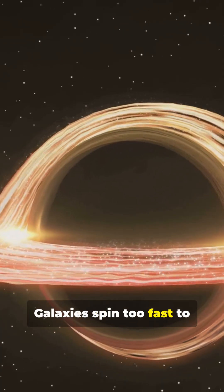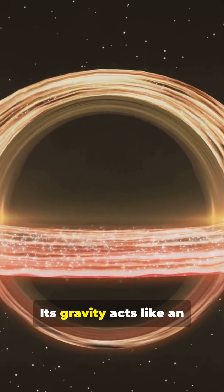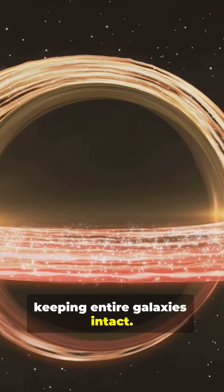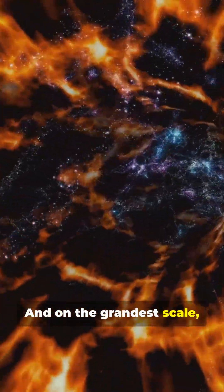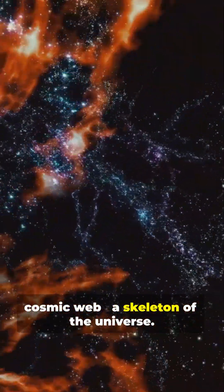Galaxies spin too fast to hold themselves together. Without dark matter, they'd fly apart. Its gravity acts like an invisible halo, keeping entire galaxies intact. And on the grandest scale, dark matter forms a massive cosmic web, a skeleton of the universe.